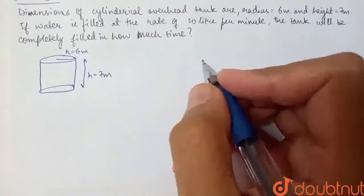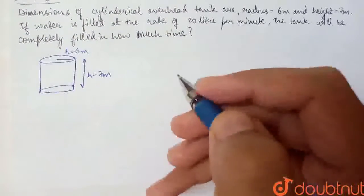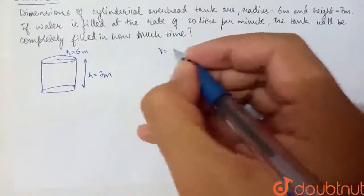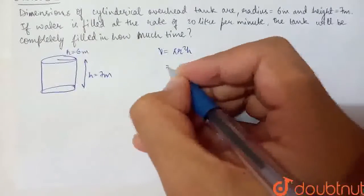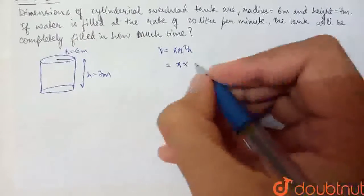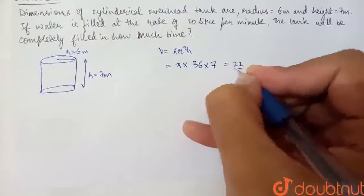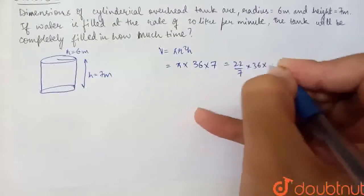We are saying that it is being filled at 20 liters per minute. The volume is πr²h. We have π into r squared, that is 6 squared, which is 36, into h, that is 7. 22 by 7 into 36 into 7. It will cancel out.